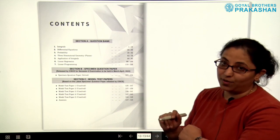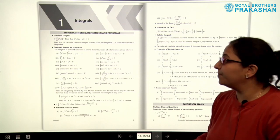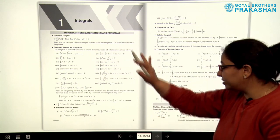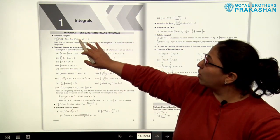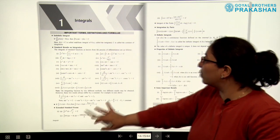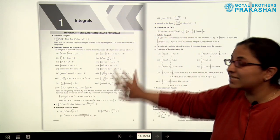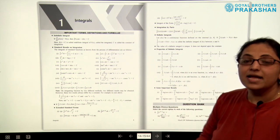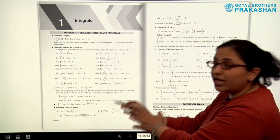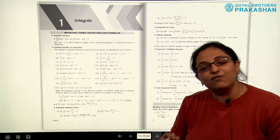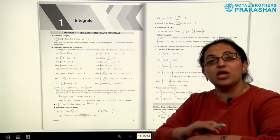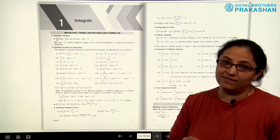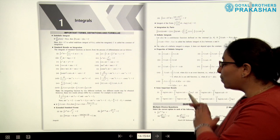Now let us see each section individually. This is Section A, Chapter 1: Integrals. The important terms, definitions, and formulae are provided at the beginning. After the formulas and definitions, we have the question bank. The summary or important points are given at the start so that the child doesn't have to go through the whole chapter, but can revise the complete chapter in a very short while and effectively.